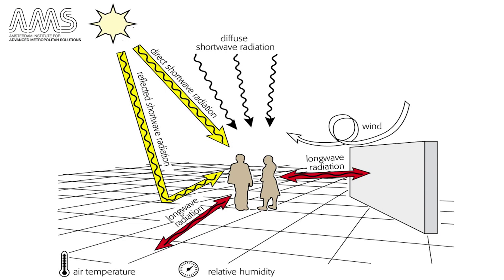We do not feel sun, shade, and wind separately from each other. Our temperature sensation depends on different factors. Short wave radiation from the sun and its reflection from urban surfaces play a role, as does whether you enter a shaded place or not. That is how you normally feel the influence of short wave radiation from the sun.